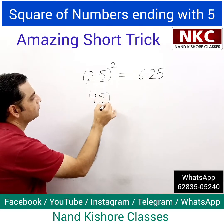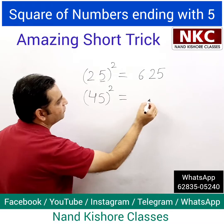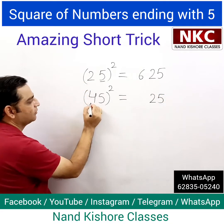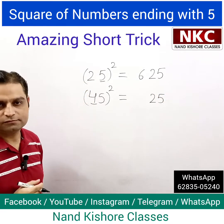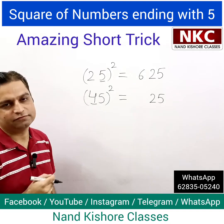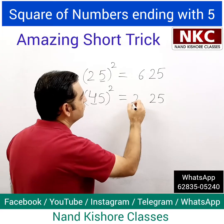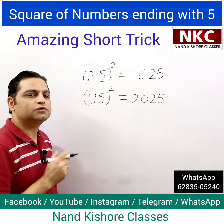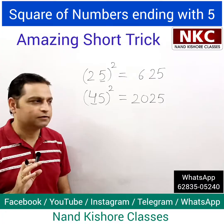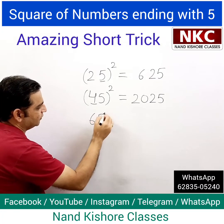Let us try with another number: 45 squared. It's ending with 5, so it will end with 25. The first number is 4, and 4 should be multiplied with the next number, which is 5. 4 multiplied by 5 is 20, so the answer is 2025.